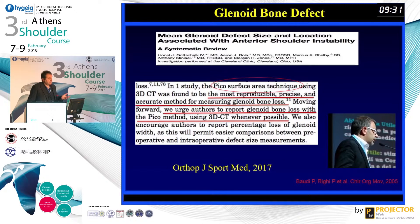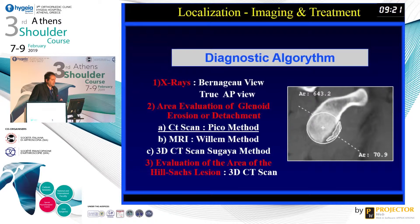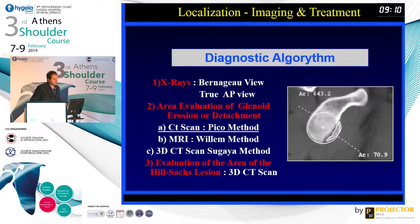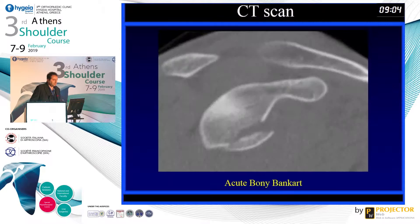Looking at recent reviews, you can be more precise with newer methods, and the PICO method is pretty reliable and precise. My diagnostic algorithm for an unstable patient is to start with X-ray, looking at the glenoid with a true AP or Bernageau view. If there is bone loss, I do a CT scan, and it is also important to look at the other side — the humeral head — with a 3D CT scan.